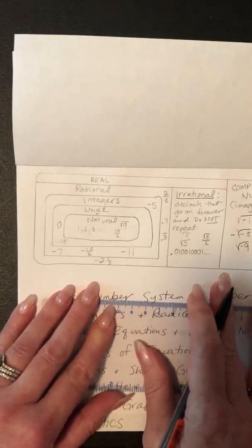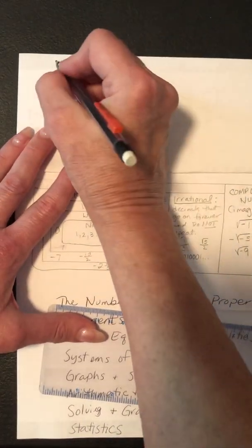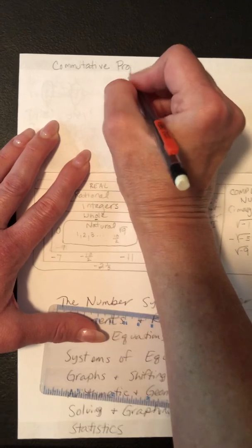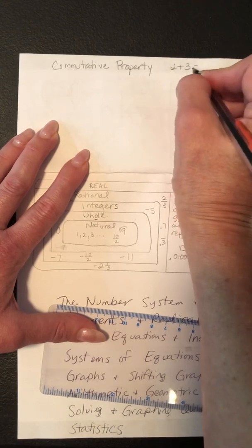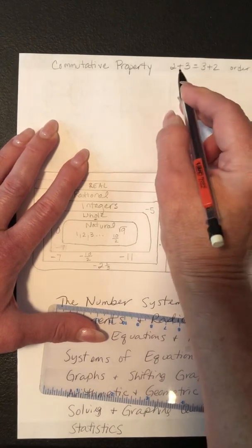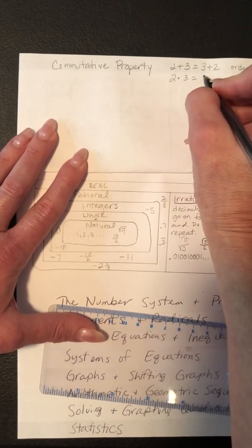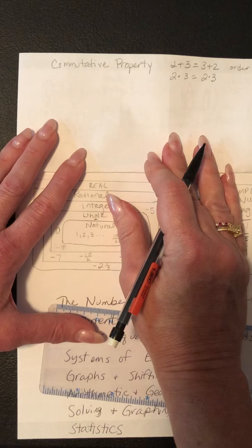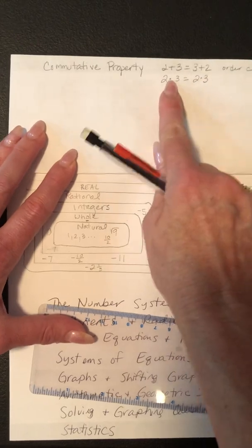Now let's talk about the properties in this tab. The first is the commutative property — note it does not have an N in it. The commutative property is when order changes, like 2 + 3 = 3 + 2. There's a commutative property of addition and of multiplication, but not of subtraction or division, because 2 − 3 and 3 − 2 are not the same.